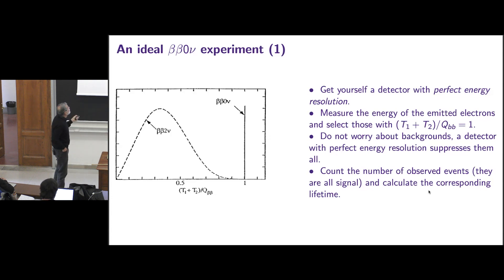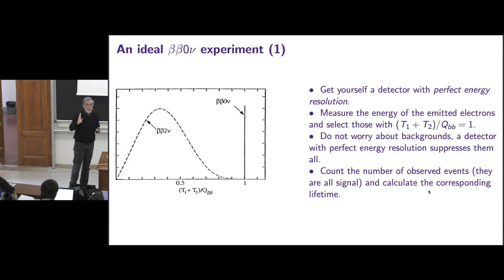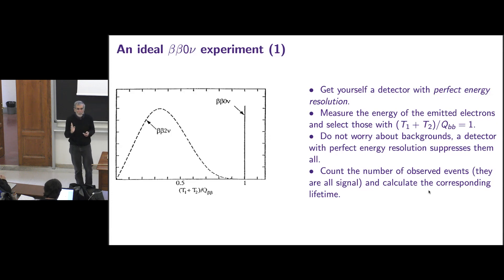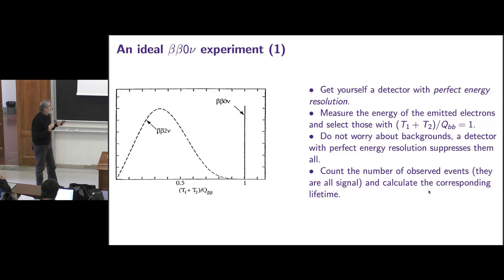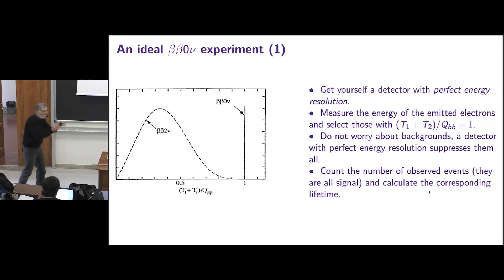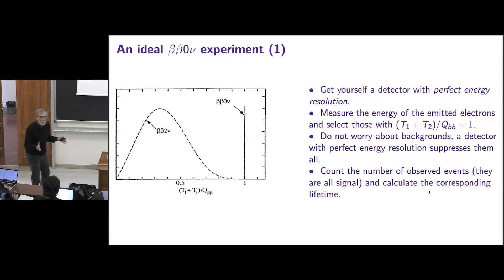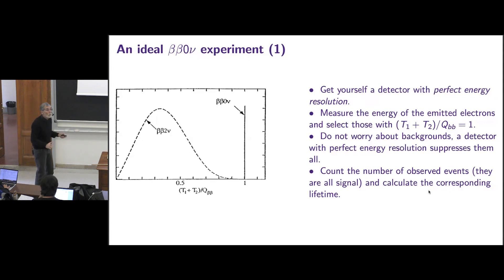Why do I need perfect? Because perfect implies that I can measure the endpoint of the 2νββ with zero width, which implies that no background can make it in, because I can always be more selective than the background number, which implies that I need just one event to make a discovery with no error. This is the only way I could make a completely warranted background-free experiment. Zero resolution — if you have a perfect idea to give me zero width, let me know. In this case, you just count the events you observe at the signal endpoint, and from that count the corresponding lifetime.